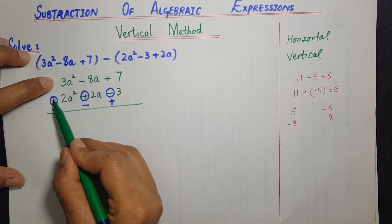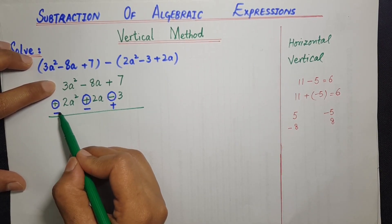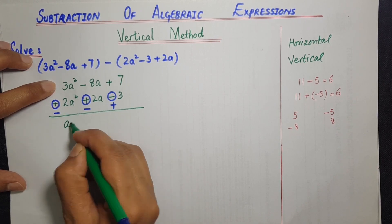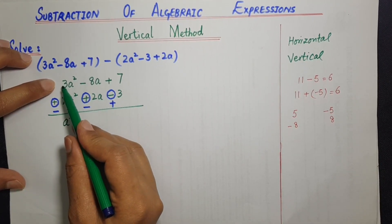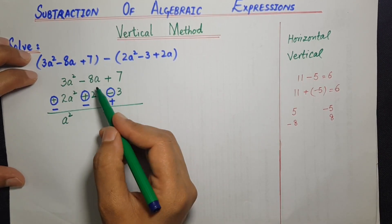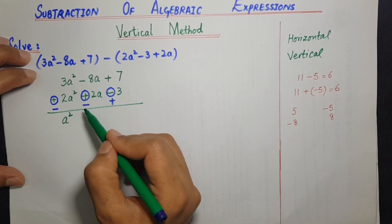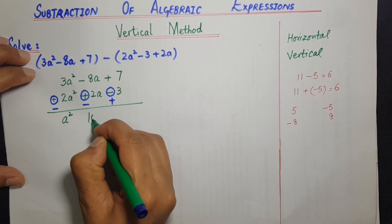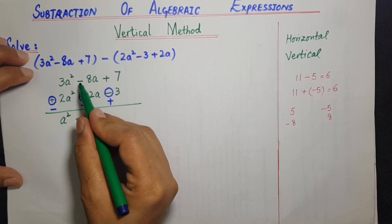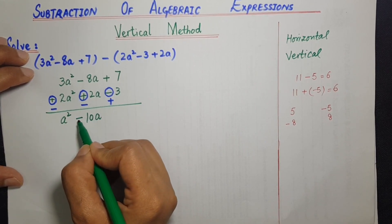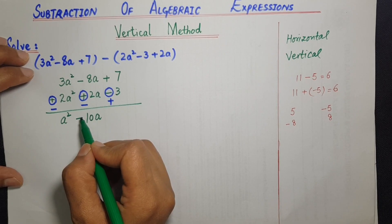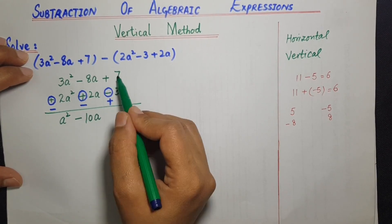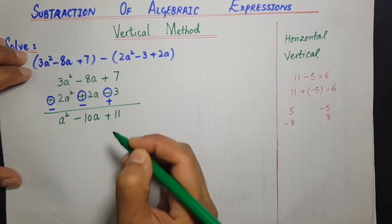اب یہاں دیکھئے: 3 کے ساتھ plus ہے اور 2 کے ساتھ minus کا sign ہے — opposite signs میں ہم minus کرتے ہیں، 3 minus 2 that is equal to a²۔ sign وہ آئے گا جو بڑی رقم والے کا ہے، یعنی 3 والا۔ اسی طرح باقی terms کو بھی solve کریں گے۔